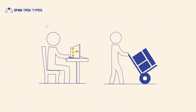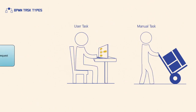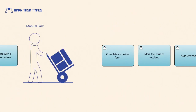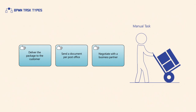For tasks performed by a person, BPMN distinguishes between a user task and a manual task. A user task represents a typical workflow task, executed by a person with the assistance of a process-aware application. A manual task is performed physically.